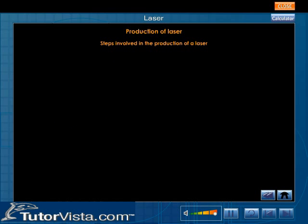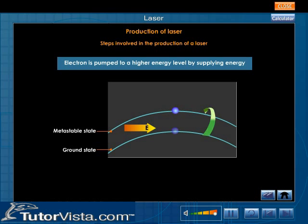Shown here are the steps involved in the production of a laser. Electron is pumped to a higher energy level by supplying energy.